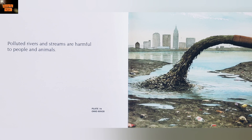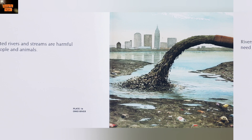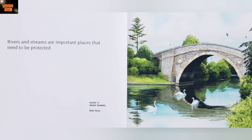Polluted rivers and streams are harmful to humans and animals. Rivers and streams are important places that need to be protected.